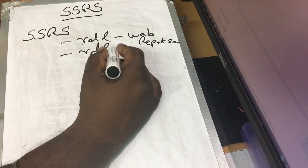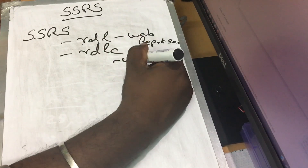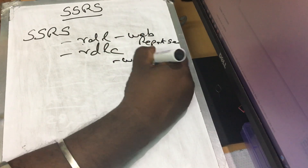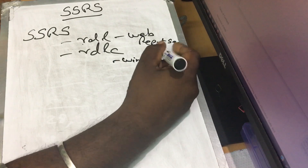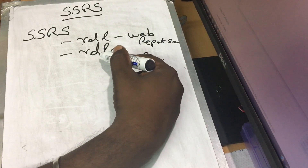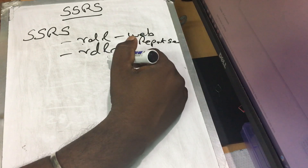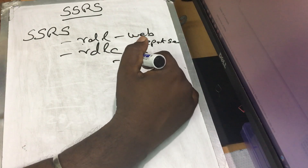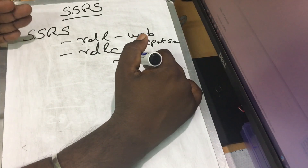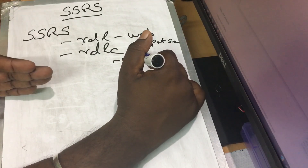RDLC is for Windows applications. If you want to use a Windows application, you will use RDLC files. If you want to use the report on a server, you will use the report server.